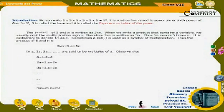Chapter 3: Exponents and Power. Introduction: We can write 5 × 5 × 5 × 5 × 5 × 5 as 5 to the power 6. It is read as '5 raised to the power 6' or '6th power of 5.' In 5 to the power 6, 5 is called the base and 6 is called the exponent or index of the power.